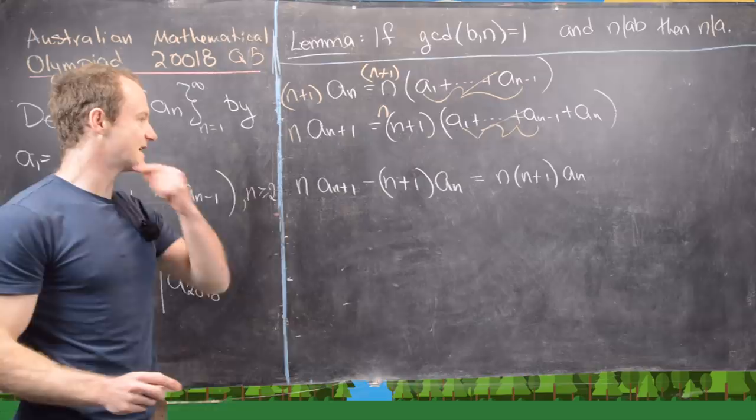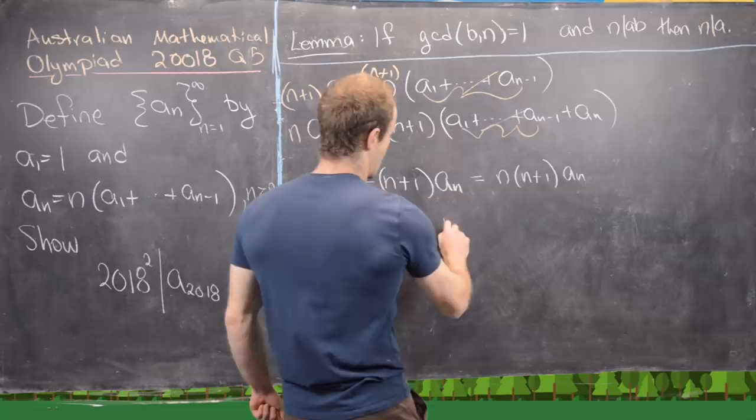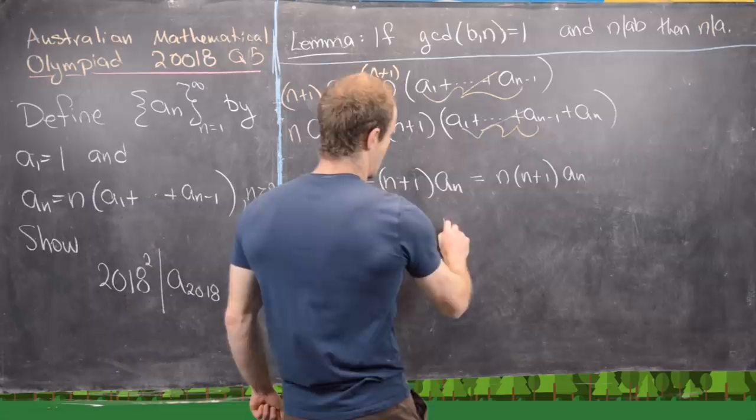But the great thing about this is we can easily solve this thing for a_{n+1} in terms of a_n. In fact here we have n times a_{n+1} is n plus 1 times a_n plus n times n plus 1 times a_n.